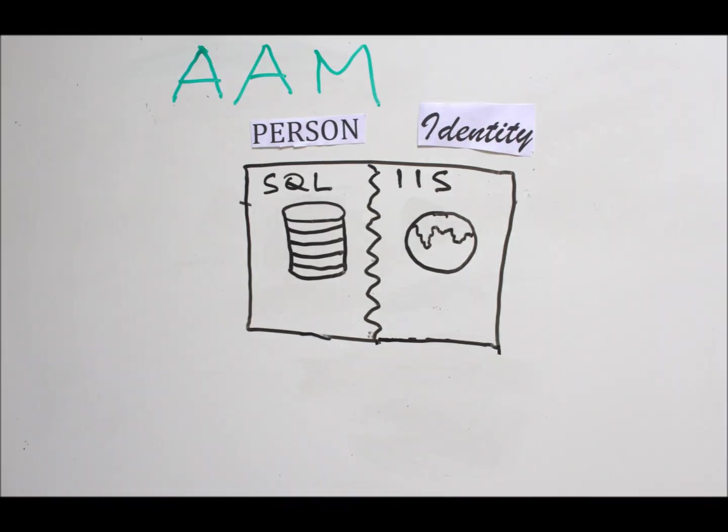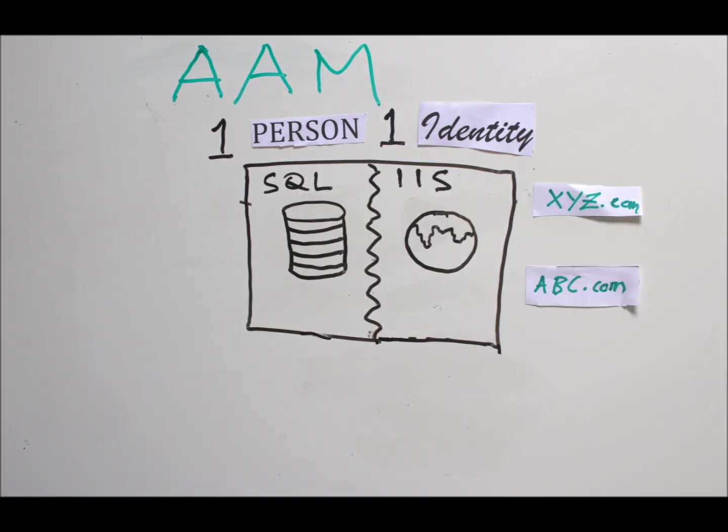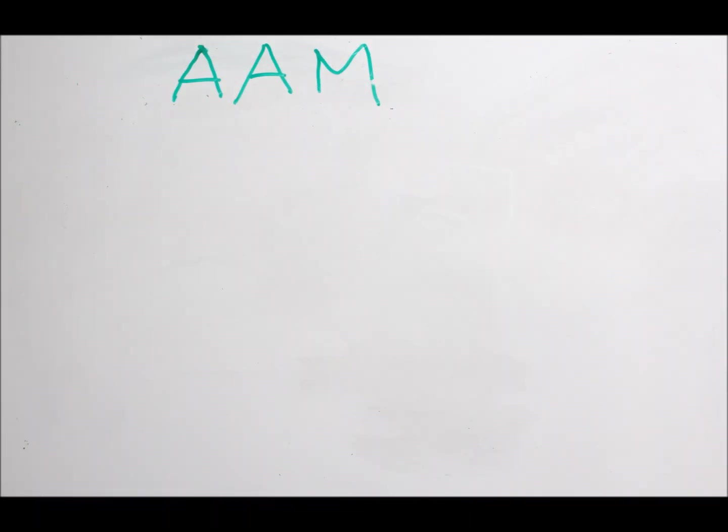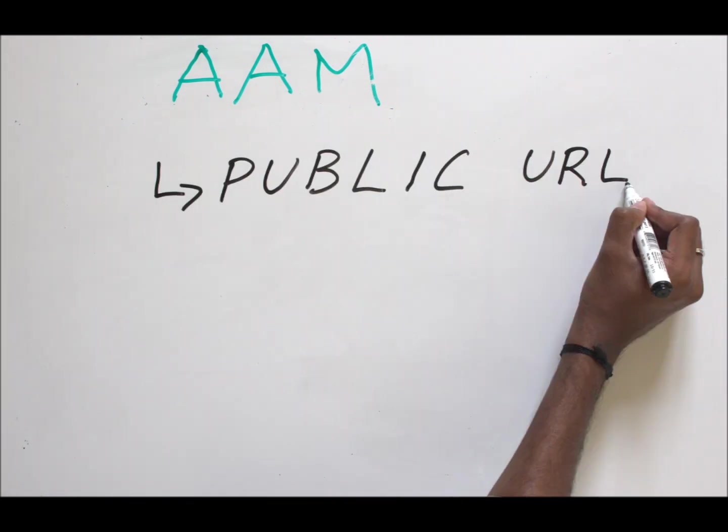Having talked about that, let's now talk about a scenario where I just want to have one identity, but I want to have multiple names for the same identity. That's where Alternate Access Mapping comes into picture. Alternate Access Mapping has two parts to it. One is the public URL, the other one is the internal URL.